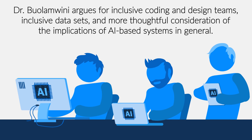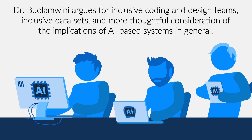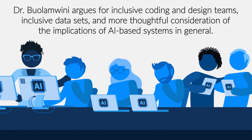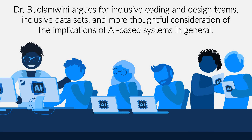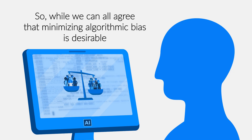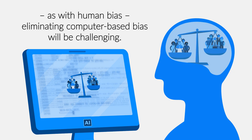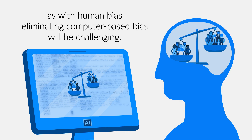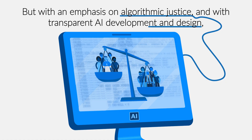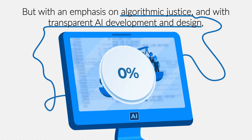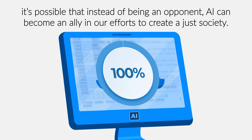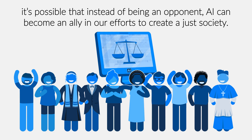Dr. Bulamwini argues for inclusive coding and design teams, inclusive datasets, and more thoughtful consideration of the implications of AI-based systems in general. While we can all agree that minimizing algorithmic bias is desirable, as with human bias, eliminating computer-based bias will be challenging. But with an emphasis on algorithmic justice and transparent AI development and design, it's possible that instead of being an opponent, AI can become an ally in our efforts to create a just society.